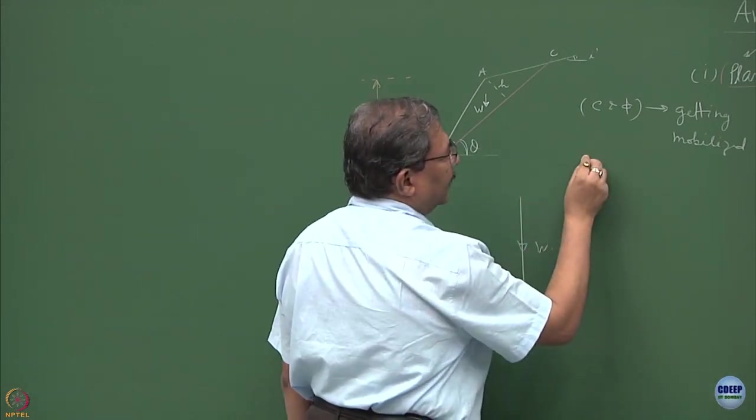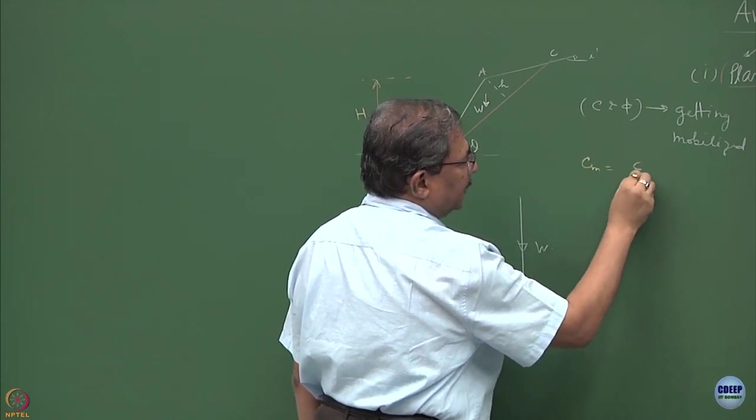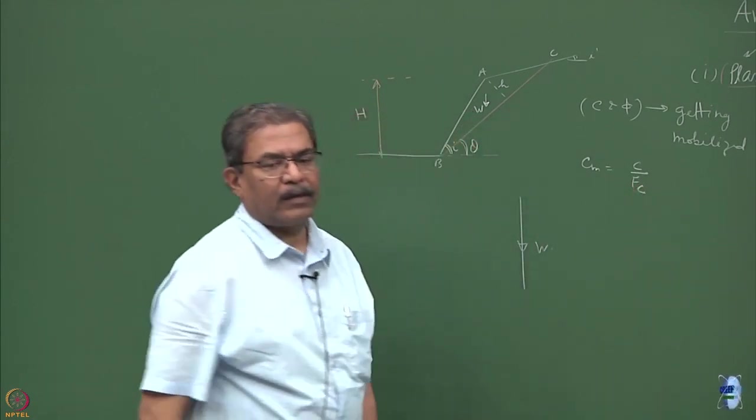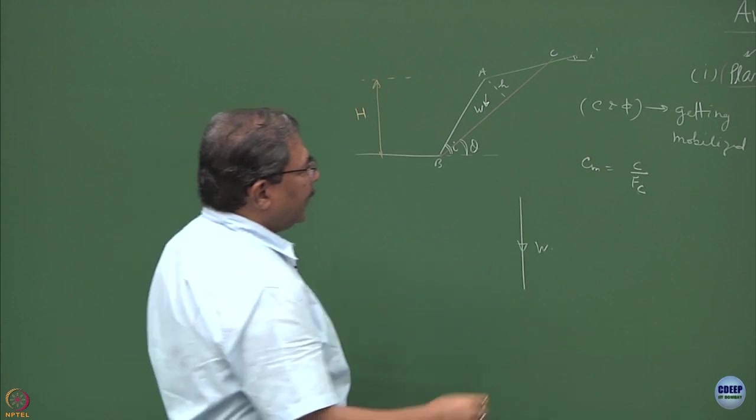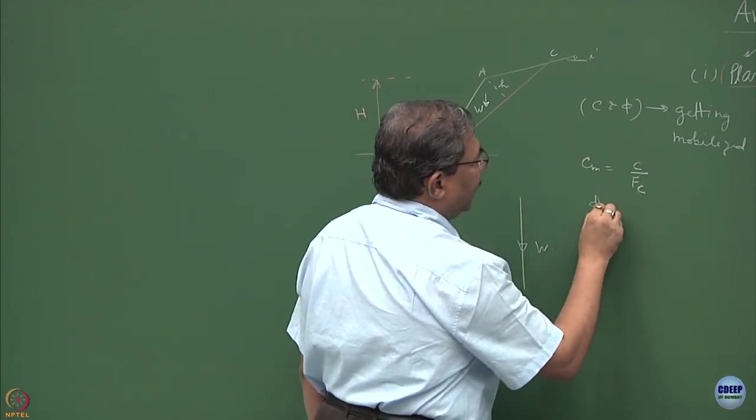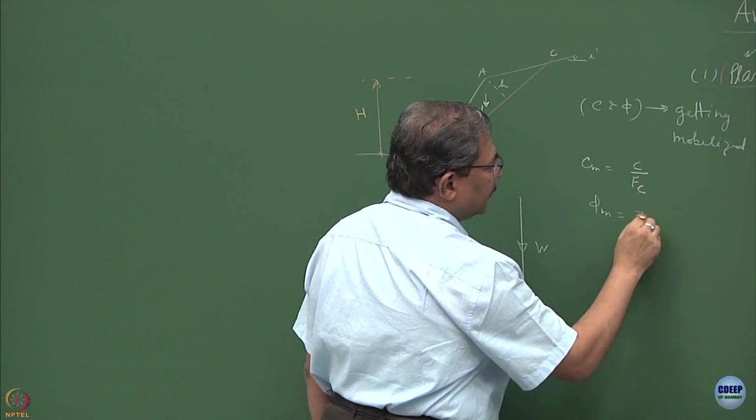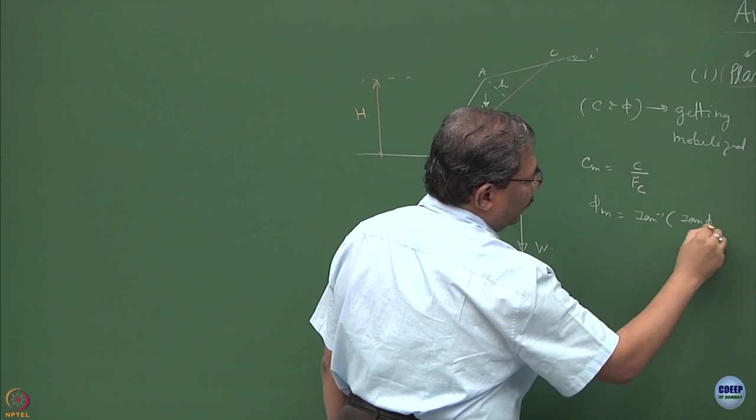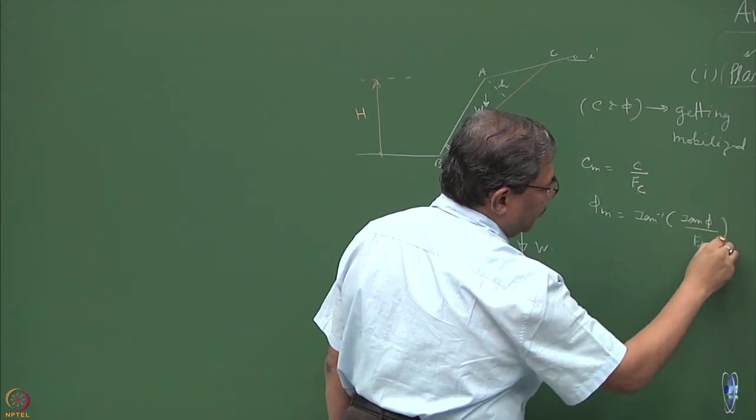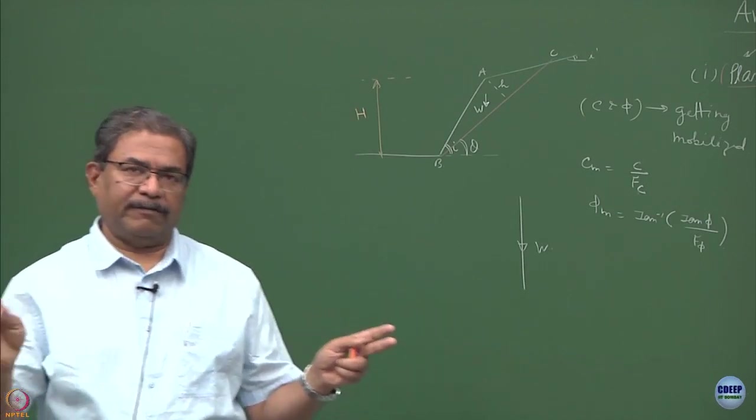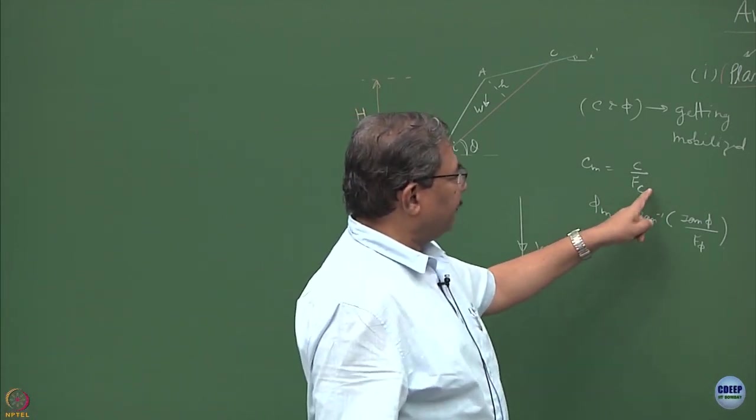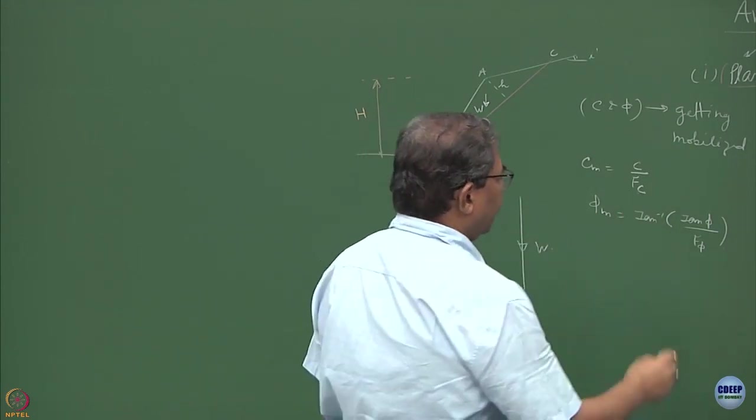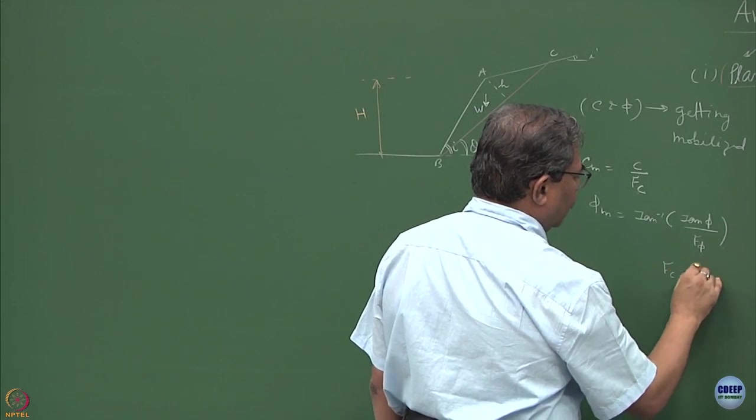Mobilization means the entire C and phi of the material is not going to be used against instability. Certain fraction of this is going to be used. That means if I say that C mobilized is equal to C over factor of safety associated with cohesion, and similarly if I say phi m is the mobilized friction angle which is equal to tan inverse of tan phi over F of phi. So I am using two factors of safety: one is the factor of safety for cohesion, another one is the factor of safety for friction.